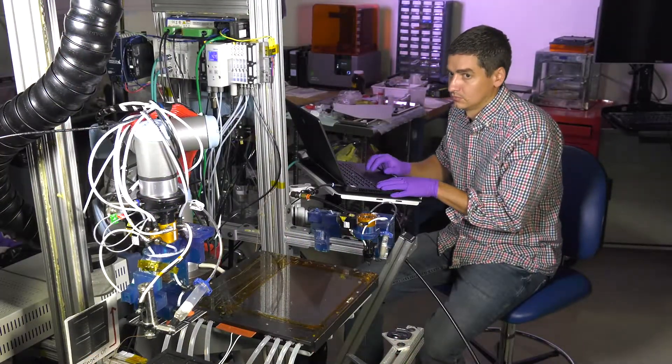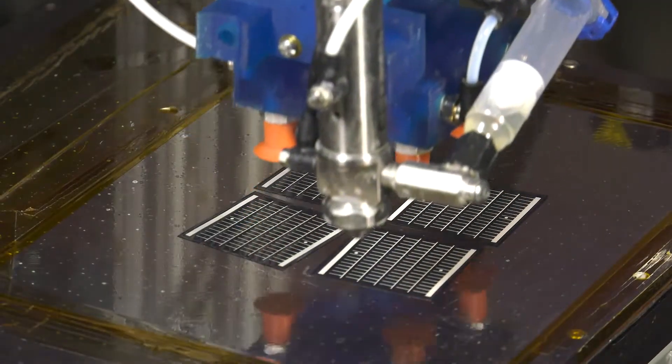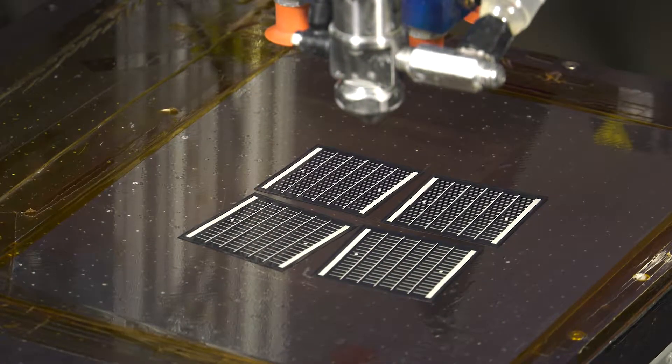This project, we call it PAPA, Print Assisted Photovoltaic Assembly. Our thought was, can we use robotics and 3D printing to assemble these thin film solar panels to both lower cost, get rid of all that touch labor,